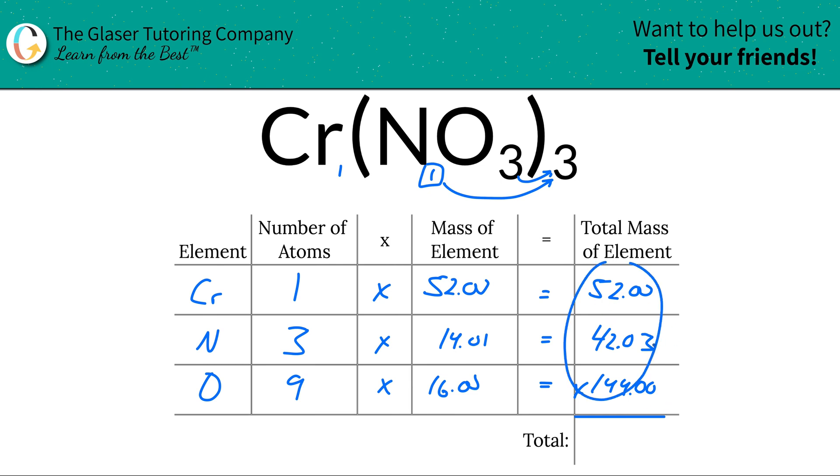To find the total mass of the compound, just simply add this all together. Don't multiply it as I just wrote there. You're going to add it. Don't multiply it. You're going to add up that whole column.